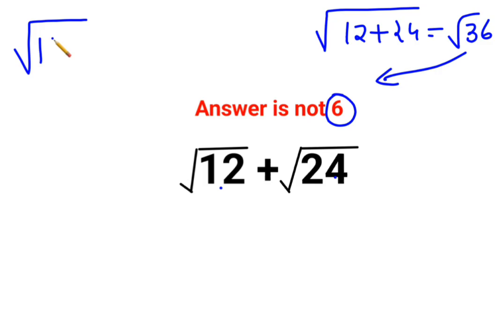So here what you will do is, √12, let's express it in terms of a perfect square and some other number. Similarly here, √24 can be written as, sorry, this can also be written as 4 multiplied by 6.